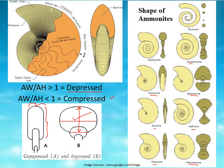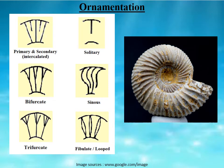Regarding ornamentation — the external shell sculpture of cephalopods — in most cases the shell is ornamented with radial ornamentation: all ridges radiate from the axial axis of coiling. This is the most commonly found ornamentation. Spiral ornamentation, which is parallel to the spiral growth of the cephalopod shell, is very insignificant or less common.